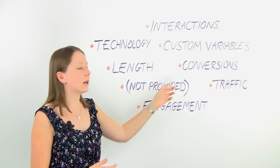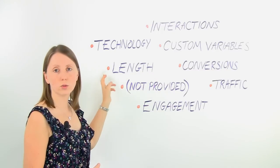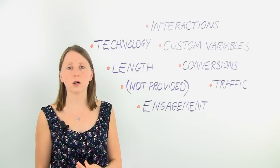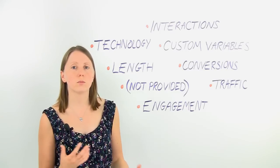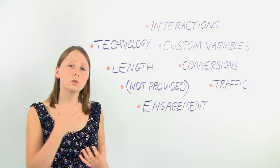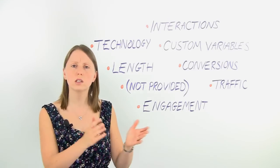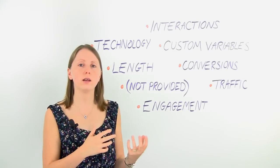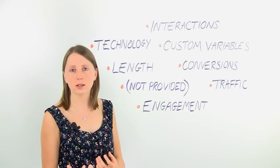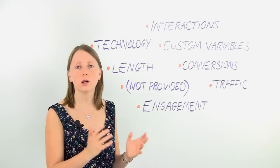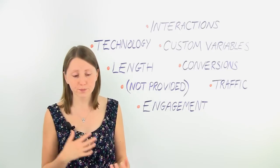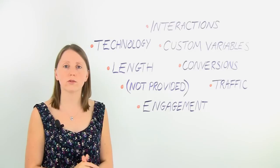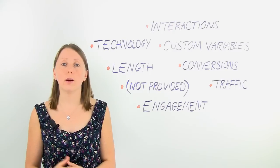Next I'm going to talk about a group of segments: traffic — the overarching one that includes not provided and length. Starting with a specific one: length. This is about keyword length. When you're targeting through SEO and pay-per-click advertising, you're getting visits from search engines where people type in all sorts of things to reach your site. Instead of just saying one keyword did well, you can say this set of keywords did well. You can group them by length to see what you're targeting and whether that ties in with performance, thinking about whether you need to target the long tail more or whether generics are where you're missing conversions.